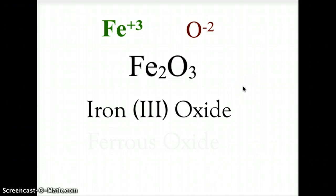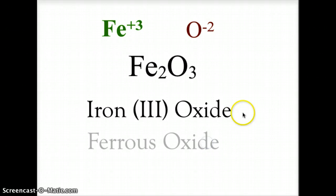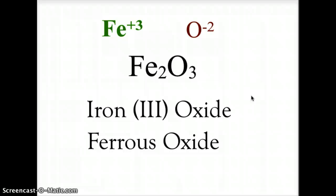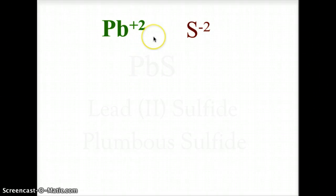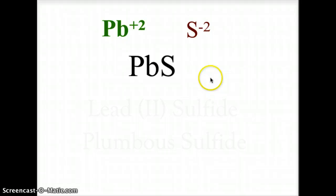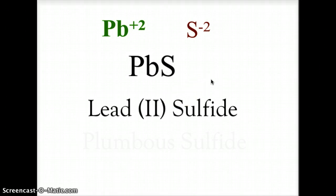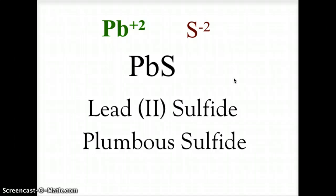When we name Fe₂O₃, we could use the Stock name, iron(III) oxide, because we're using the plus-three ion, or we could use the common name, ferric oxide, representing the plus-three ion of iron. Our last example is PbS — Pb²⁺ and S²⁻ — so we have lead and sulfide, forming the compound PbS. Lead is a plus-two ion, so it's lead(II) sulfide, or in its common name, plumbous sulfide.